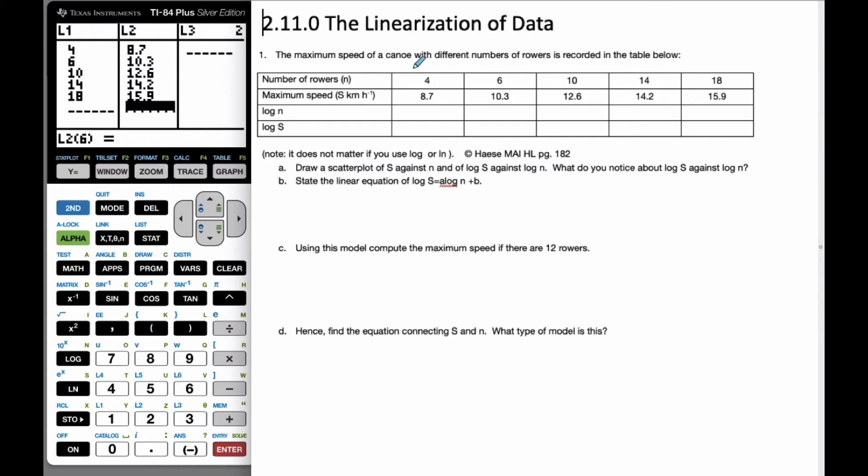All right, so it's Mr. Rops here, and we are going to do some linearization of data. And so we have a maximum speed of a canoe with different numbers of rowers according to the table below.